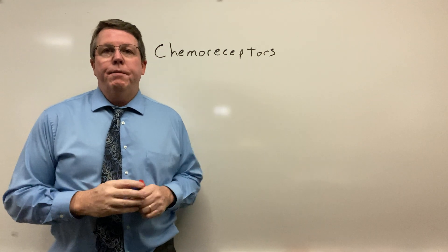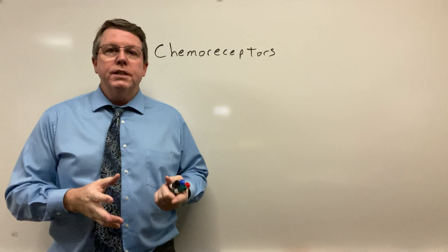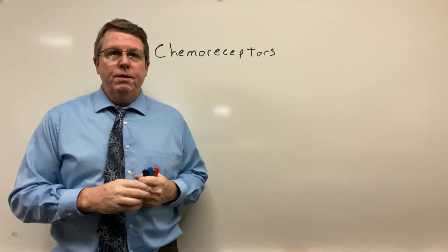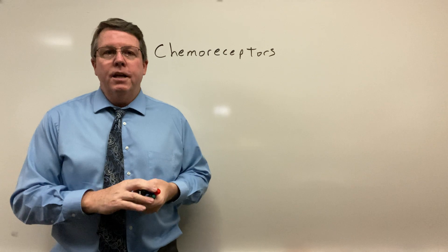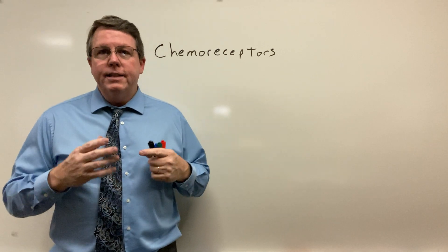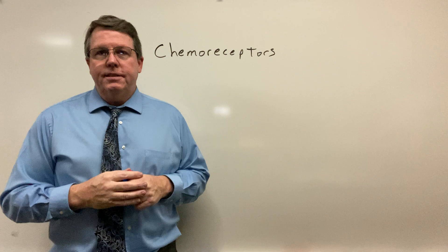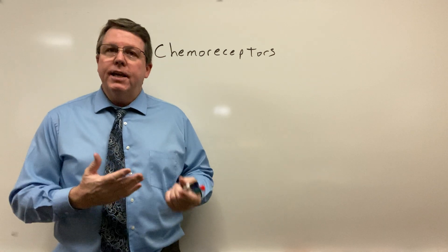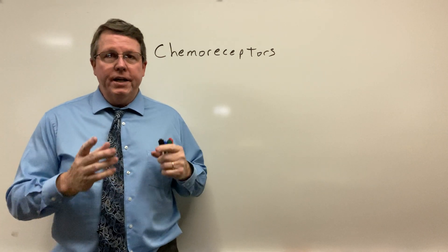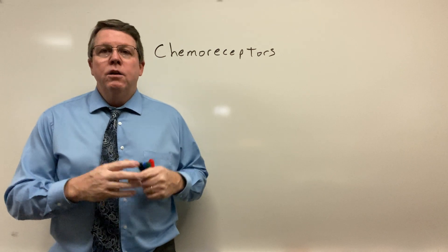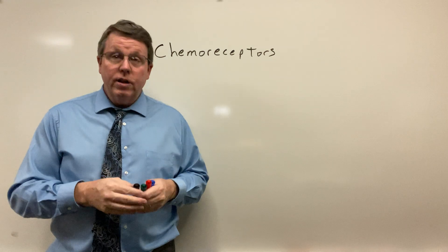Hi everybody. Today we're going to be talking about chemoreceptors. Chemoreceptors are basically receptors that we find in our bloodstream or in our blood vessels and also in the medulla oblongata. What they're going to measure is the amount of gases and ions that are in our body, and then they take appropriate action by sending signals to some part of the body, such as the medulla oblongata, where our body can take action such as increasing or decreasing the amount of breathing we do.